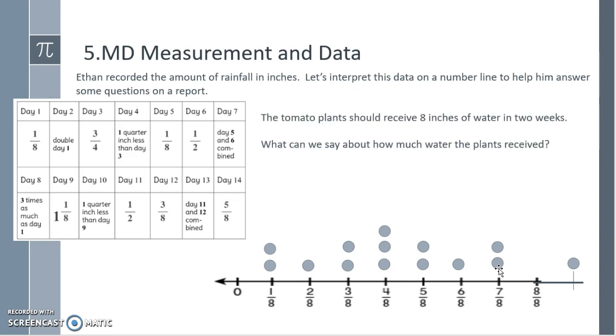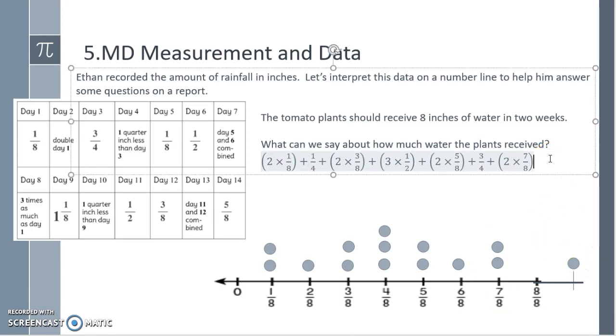The tomato plants should receive eight inches of water in two weeks. What can we say about how much water the plants receive? So we'll need to add them all up. So I have two copies of one eighth, two eighths plus one copy of two eighths or one fourth, plus two copies of three eighths, three copies of one half, two copies of five eighths, a three fourths or six eighths, two copies of seven eighths, plus three fourths, plus one copy of nine eighths.